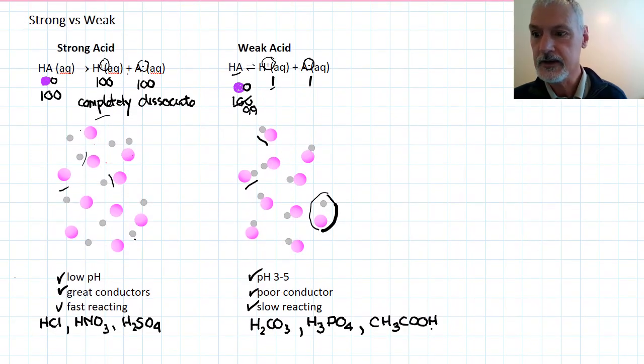If we look back here, we can see in the case of the strong, a one-way arrow and a two-way arrow or equilibrium arrow indicating the weaker situation.